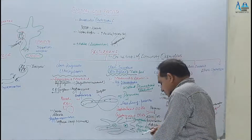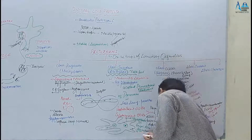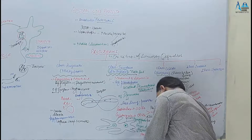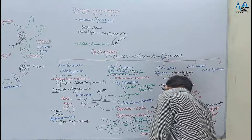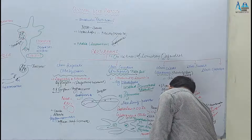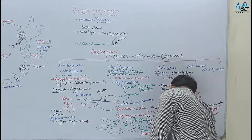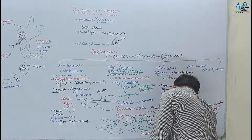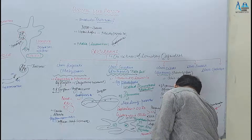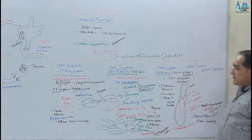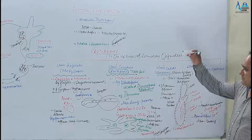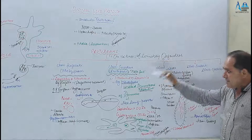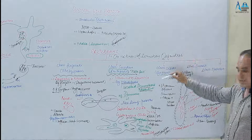Amoeba mein bhi mostly asexual reproduction hoti hai aur woh by the process of fission — especially multiple fission — hoti hai. Yeh teen classes humne yahan discuss ki hain: Flagellata/Mastigophora, Sarcodina/Rhizopoda, aur Ciliata/Ciliophora.